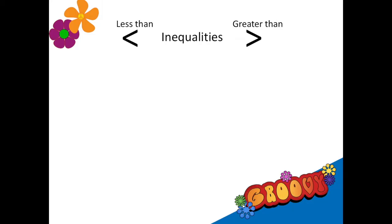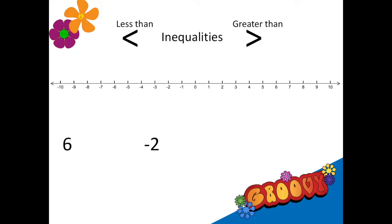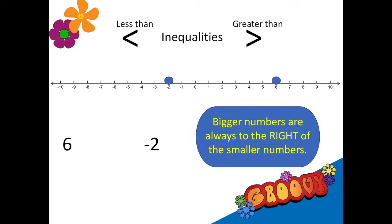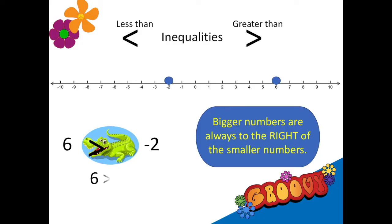Let's say I want to compare the numbers six and negative two. First I'll draw a number line, then plot each number on it so it's easier to see. The bigger numbers are always to the right of the smaller numbers, so six is to the right of negative two — it's bigger. That's the one the alligator goes for; his mouth makes the greater than sign. So I write: six is greater than negative two.